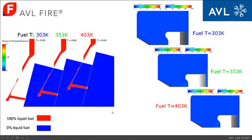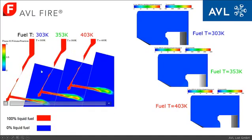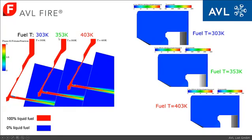We will see three different nozzle flow simulation results, differing in the temperature level of the fuel: 303 Kelvin on the left hand side, 353 Kelvin in the middle, and 403 Kelvin on the right hand side.